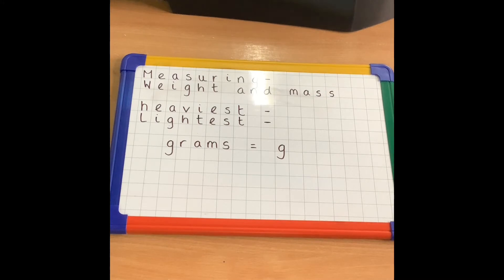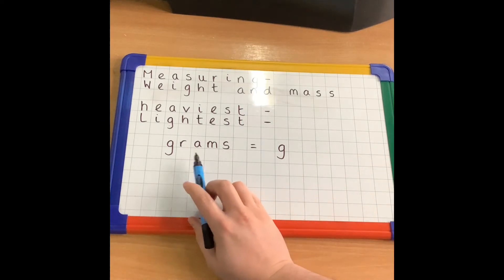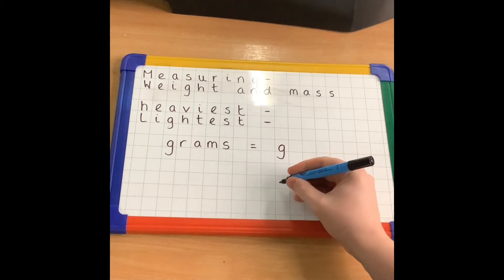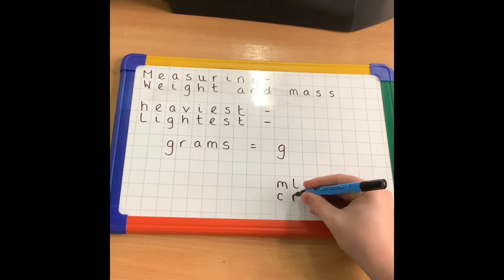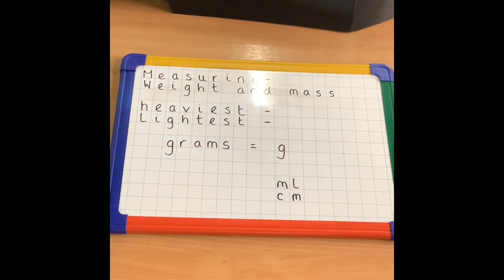When we are measuring weight, what we usually use to measure weight are grams. And we can shorten this just like we have with ml for millilitres and cm for centimetres to just a g, so g for grams.